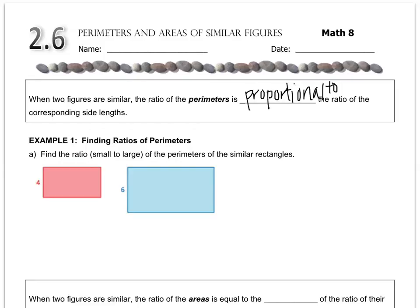Here's an example. We've got two rectangles, and they're telling us that they're similar. We want to find the ratio from small to large of the perimeters. The ratio of the side lengths is 4 to 6, so any ratio equivalent to 4 over 6 will be the ratio of the perimeters. Remember, a ratio is just the relationship between two values. So the perimeter could be 8 and 12, or 12 and 18.